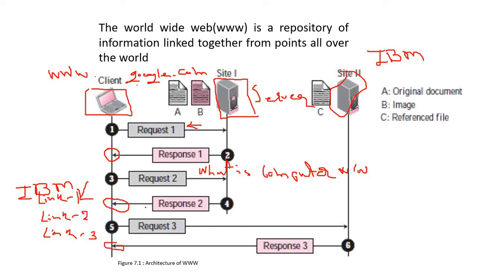Whenever the client clicks a link — suppose the homepage link of IBM — the server responds with IBM's homepage. That is the architecture of the World Wide Web and how it is working.